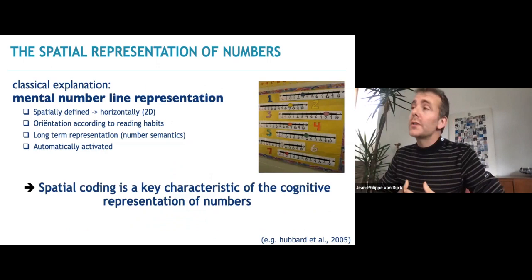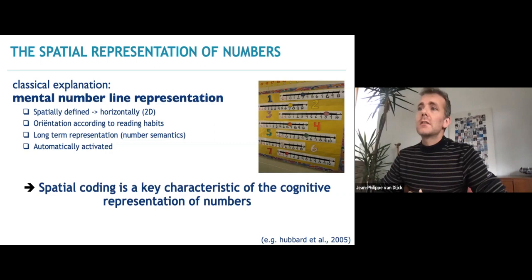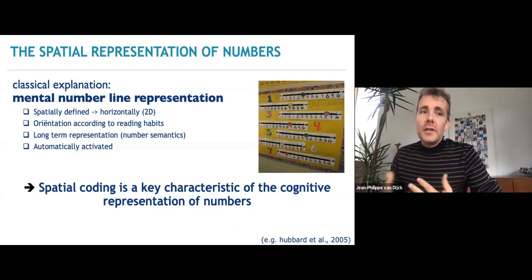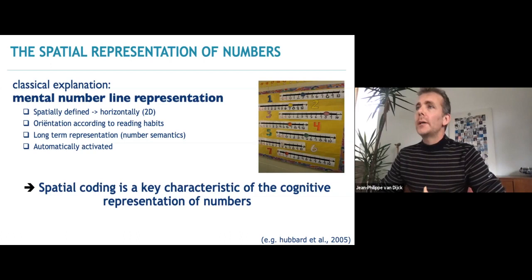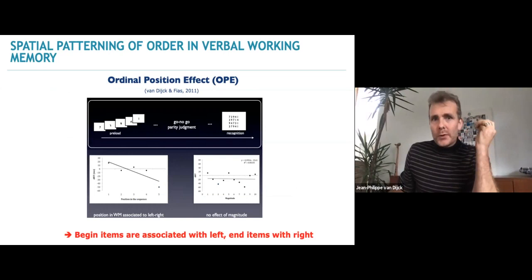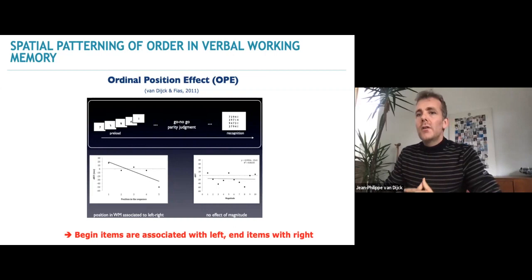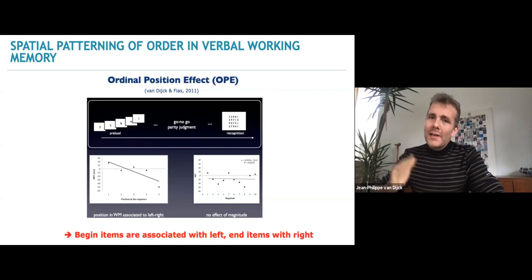The SNARK effect is seen as evidence for the idea that the mental representation of numbers takes the shape of a mental number line — typically considered horizontally in two dimensions, but as we've seen in the previous talk, it can also be in three dimensions. It's related to reading habits, as indicated by Nikola. People think it's a long-term representation as part of number semantics that is automatically activated. You can discuss whether the SNARK effect is driven by the ordinal or magnitude meaning of numbers, but here I take a different perspective and really manipulate the necessity to code the order of information.